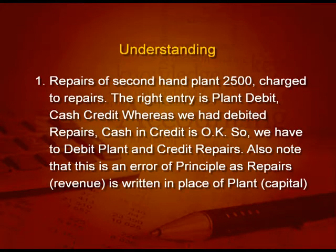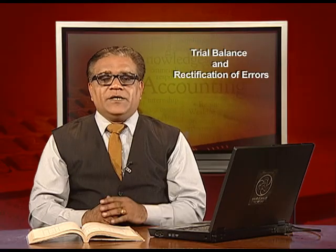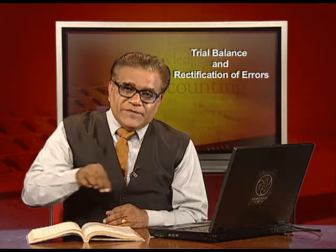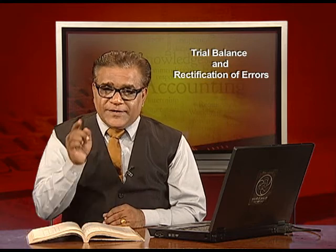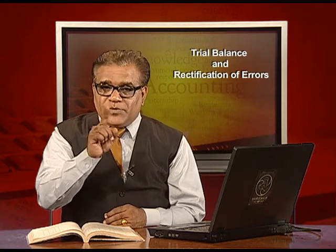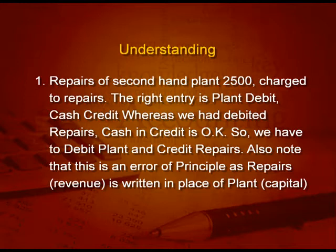Entry number one: repair of second-hand plant 2,500 charged to repairs. The right entry in this case is plant debit and cash credit, because when you purchase a second-hand plant, whatever expenses you do until you use it have to be capitalized and written in the plant account, not the repair account. The right entry is plant debit, cash credit. But what we have done is debited repairs and credited cash. Cash in credit is okay, so we debit plant and credit repairs to rectify it. Note that this is an error of principle, because repairs is a revenue expense written in place of plant, which is a capital expense.